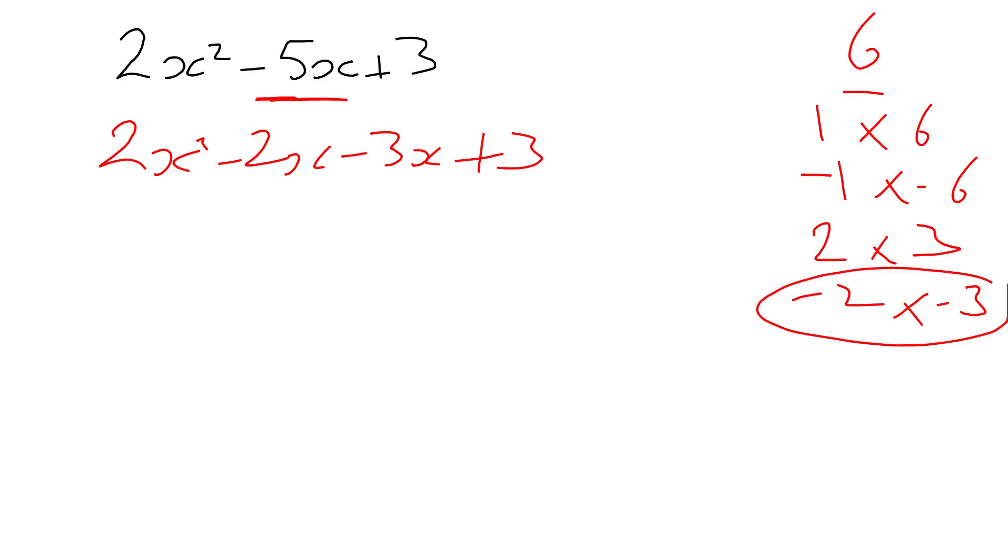So, step 4, factorize the first pair, then factorize the second pair. So, from this first pair I can take 2x out, it will always be so many x's, to leave me with x minus 1. The second pair,